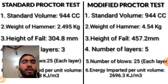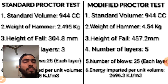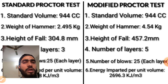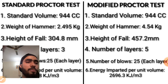The next point of difference is the height of fall — the height from where the hammer is dropped on the soil mass. It is 304.8 mm in case of standard proctor test and 457.2 mm in case of modified proctor test.